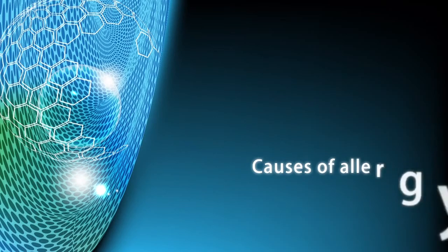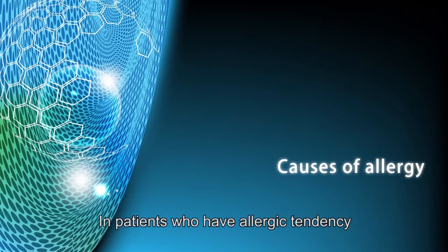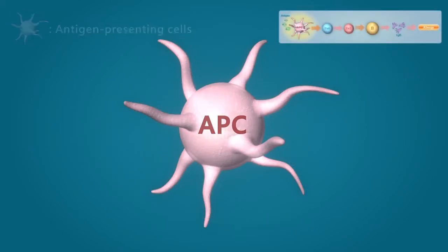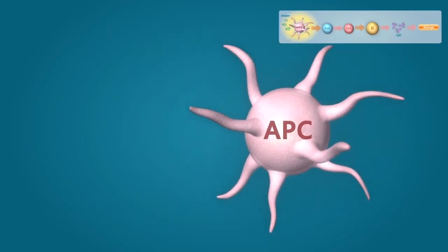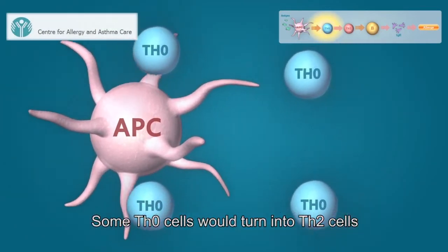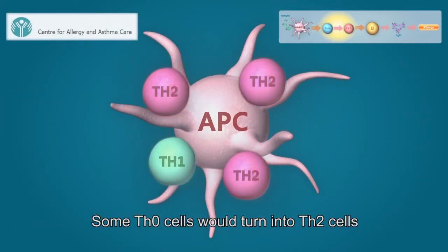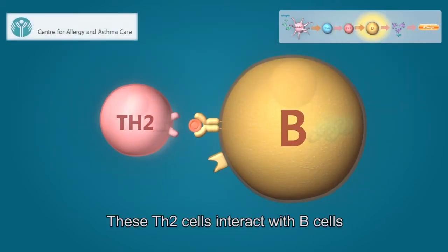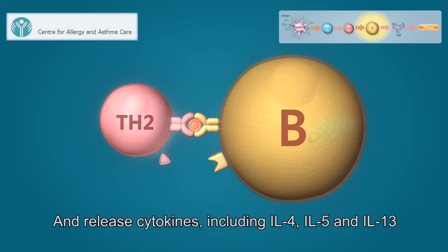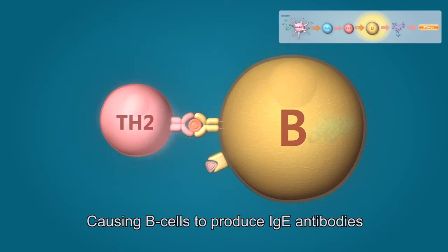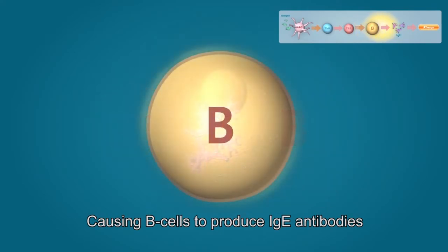Cause of allergy. In patients who have an allergic tendency, when allergens enter the APC and the APC enters the lymphatic system and interacts and activates Th0 cells, some Th0 cells would turn into Th2 cells. These Th2 cells would interact with B cells and release cytokines, including interleukin-4, interleukin-5, and interleukin-13, causing B cells to produce IgE antibodies.